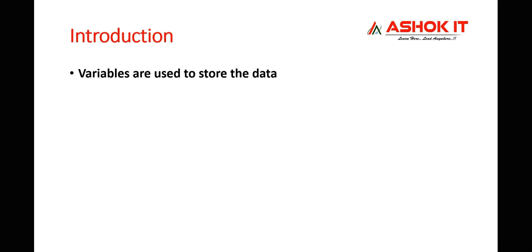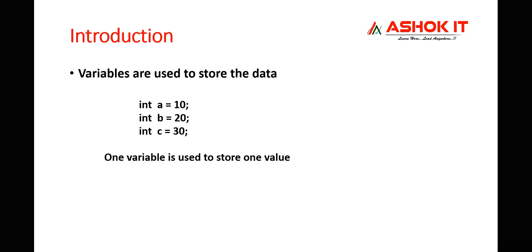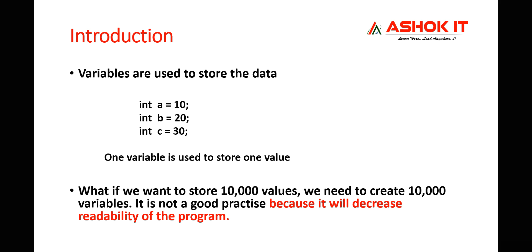In any programming language, if we want to store data then we use variables. Variables are used to store data. If I want to store one value then I take one variable like int a = 10. If I want to store another value I need another variable like int b = 20. One variable is used to store one value. If I want to store 10,000 values, I need 10,000 variables.